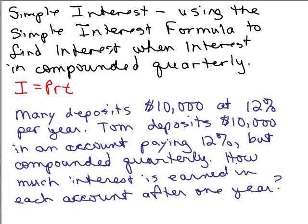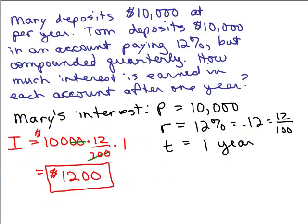In Part A, we began with this problem. Mary and Tom both deposit $10,000 in an account, but Mary does it at 12% simple interest per year, whereas Tom gets paid quarterly, and we wanted to find how much interest is earned in each account after one year. Mary's was simple — we used the formula I equals PRT and she earned $1,200 in a year. Tom's was more complicated because it was compounded quarterly; each time his interest was computed it was one-fourth of a year, so his time was one-fourth and we had to do four computations.